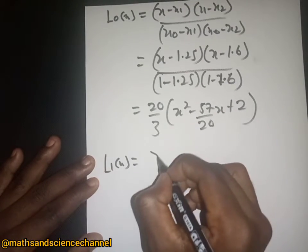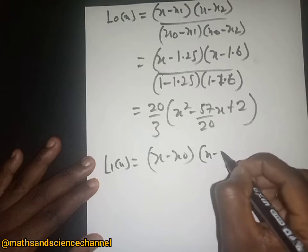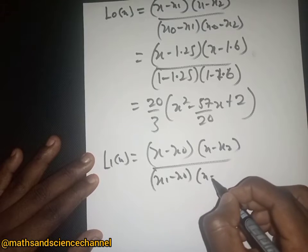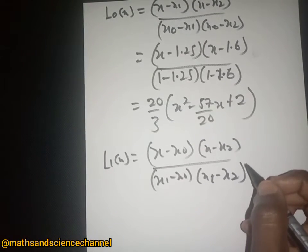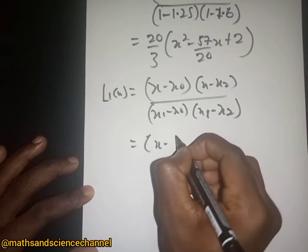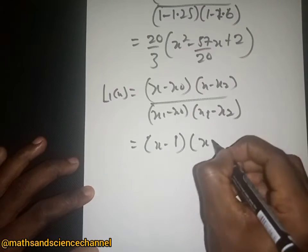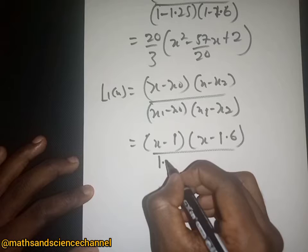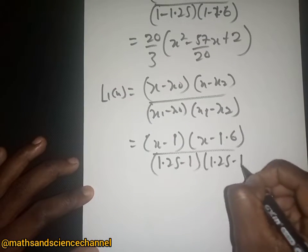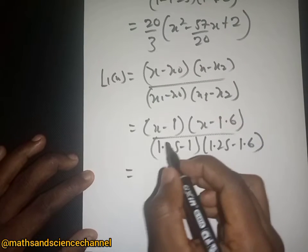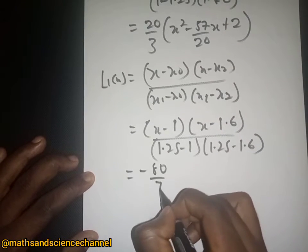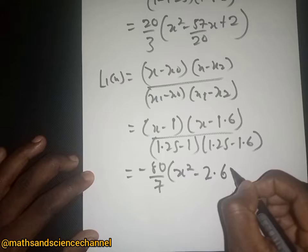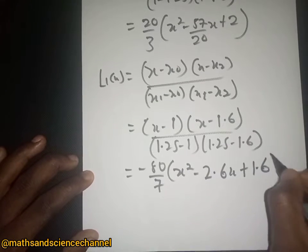For L₁(x) = (x - x₀)(x - x₂) / [(x₁ - x₀)(x₁ - x₂)]. Substituting x₀=1, x₂=1.6, x₁=1.25, we have (x - 1)(x - 1.6) divided by (1.25 - 1)(1.25 - 1.6). This gives -80/7. Expanding: (-80/7)(x² - 2.6x + 1.6).